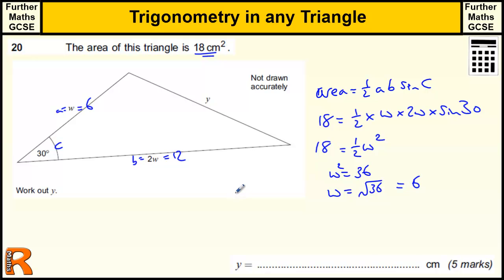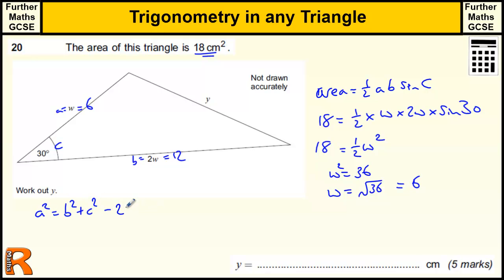If you've got those answers, you've already got two marks. Then we're going to use the cosine rule, so we need to know that formula as well. Again, that is given to you: A squared equals B squared plus C squared minus 2BC cos A. In this question we had used C as the angle, but I'm going to relabel it as A.